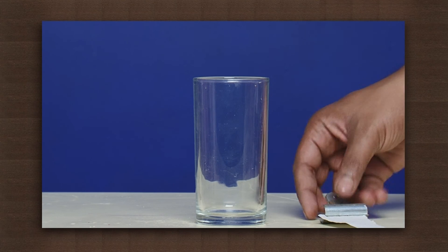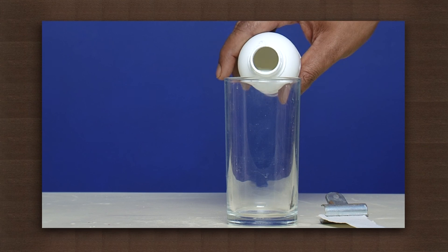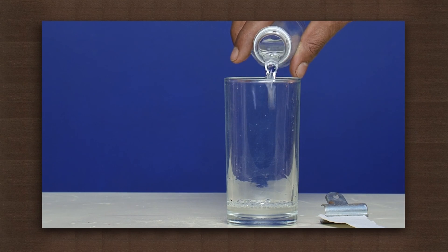Now pour some bleach and add vinegar to it. The reaction produces chlorine gas.